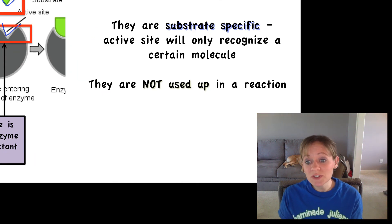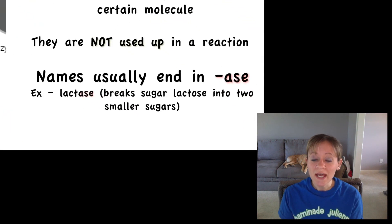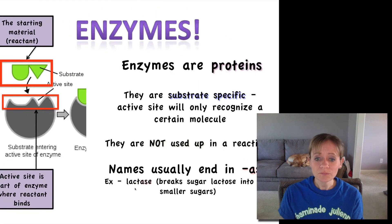Enzymes are not used up in a reaction. So once an enzyme does its thing, it's ready to go again. And it can do that same reaction over and over and over again. So they're not used up in a reaction. And enzymes are usually named with the ending, the suffix of A-S-E, ace. And so an example of that is lactase. So A-S-E. And what this does is it breaks up the sugar lactose into two smaller sugars. So a lot of times the substrate will be the beginning part of the enzyme name. So lactose.